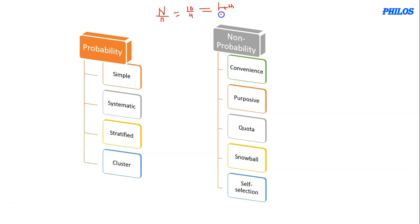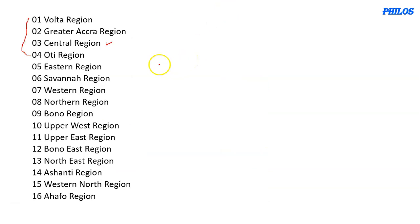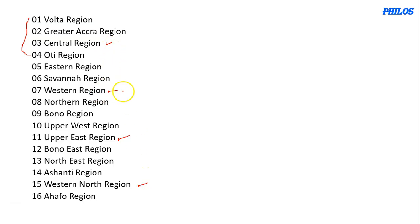From Central Region, you move four steps away: count one, two, three, four — the second sample is Western Region. Move four steps again: one, two, three, four — the third sample is Upper East Region. Move four more steps — the fourth sample is Western North Region. So you interview the regional ministers of Central Region, Western Region, Upper East Region, and Western North Region.